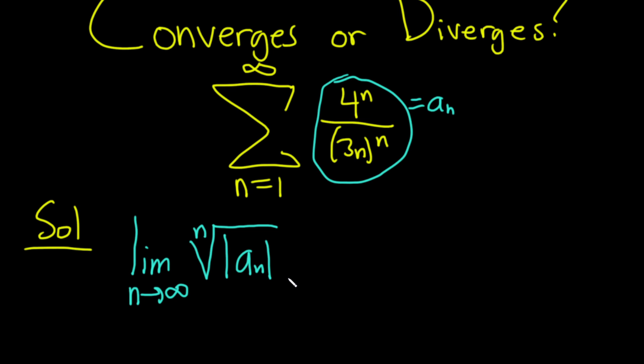If the answer we get is equal to 1, the test is inconclusive. And if the answer we get is greater than 1, we can say the series diverges.